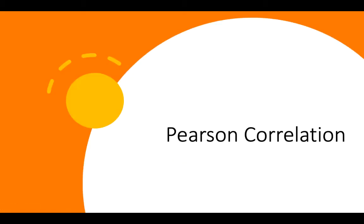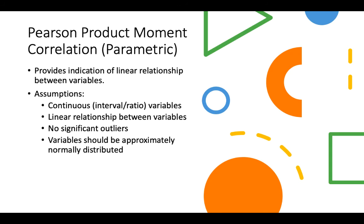Let's delve into Pearson correlation — Pearson product moment correlation. This is a parametric analysis, so it has its own assumptions. It provides indication of linear relationship between variables. You can have more than one variable — you can have a pair of variables or more than a pair, you can have four, five — the possibilities are endless.